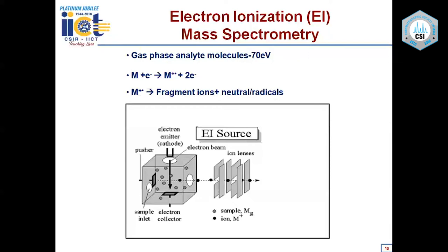Fragmentation occurs because of excess energy — for example, an excess energy of 30 eV equals about 3,000 kJ/mol, while bond energies of most chemical bonds (C–H, C–X, C–O) lie in the range of 300 to 600 kJ/mol. This excess energy drives fragmentation, producing many fragment ions that help in structural elucidation. The ions formed in the source are repelled by the repeller into the analyzer, given acceleration voltage, and the ion beam is focused by ion optical lenses.